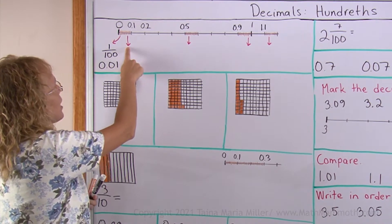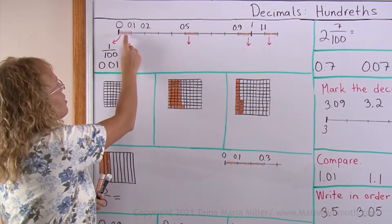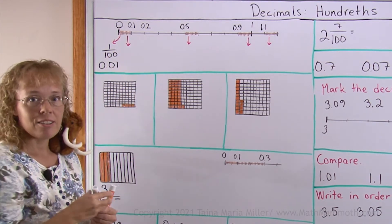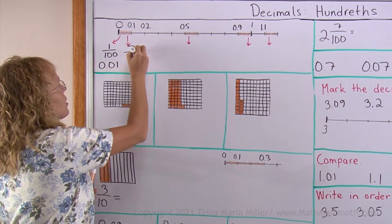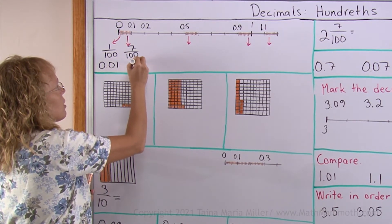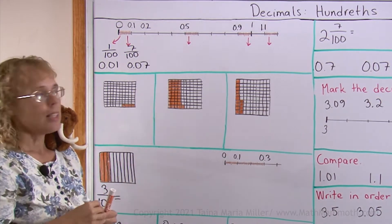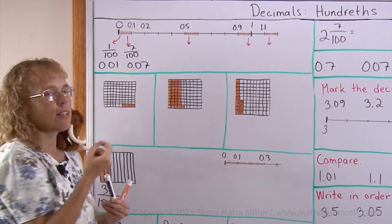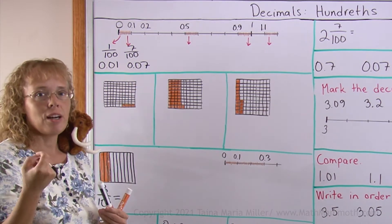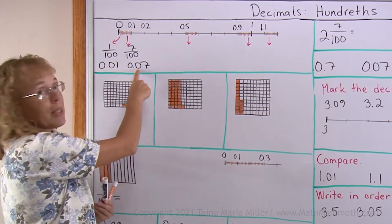Now here is my seventh line after zero and that would be seven hundredths. Seven hundredths which is 0.07. This number here in the hundredths place tells you how many hundredths. And this number tells you how many tenths.